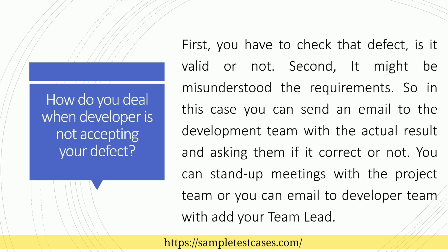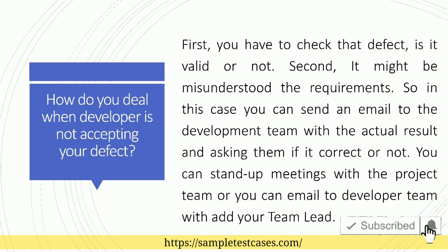How do you deal when a developer is not accepting your defect? First, you have to check whether the defect is valid or not. Second, it might be that they misunderstood the requirements. In this case, you can send an email to the development team with the actual result and ask if it is correct or not. You can arrange stand-up meetings with the project team, or email the developer team and add your team lead.